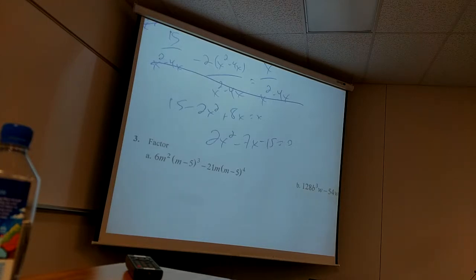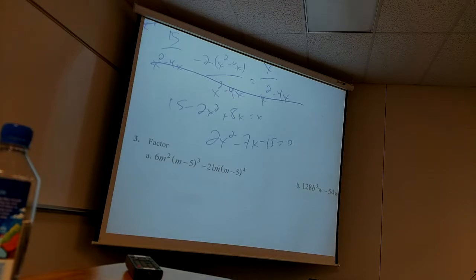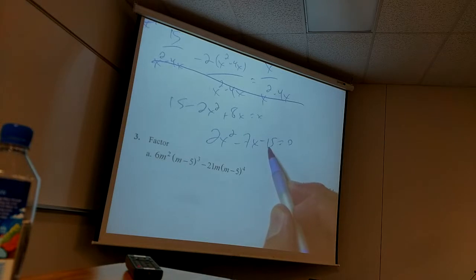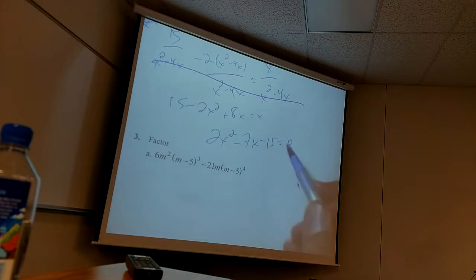This kind of factoring — getting a quadratic equal to zero from a rational equation — has to be your bread and butter. It could show up as a fifth step in a bigger problem. Now 2x² − 7x − 15 is factorable — don't reach for the quadratic formula. This is what I call the 'sure fire' method, or the AC method. Two times negative fifteen is negative thirty — find factors of −30 that add to −7.